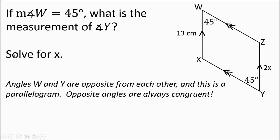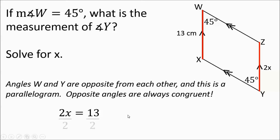Now let's solve for X. Looking at the picture, 2X labels side ZY and 13 labels side WX. In a parallelogram, opposite sides are congruent, so 2X equals 13. Dividing both sides by 2, X equals 6.5.